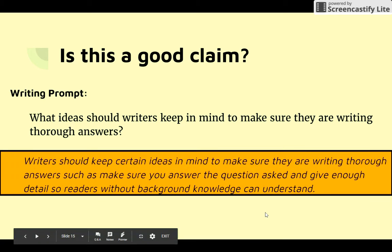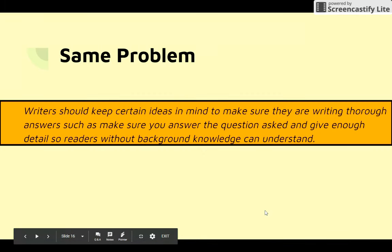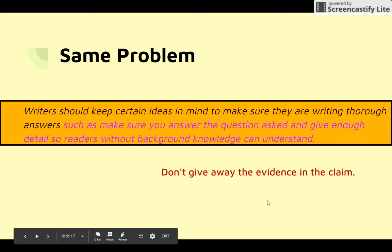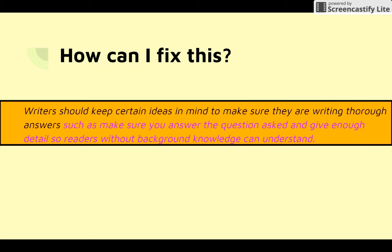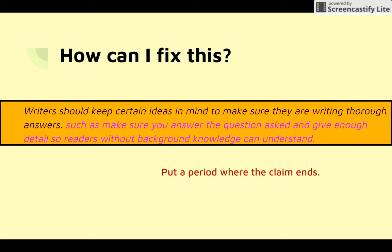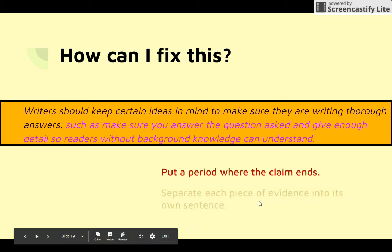Let's take a look at this claim: 'Writers should keep certain ideas in mind to make sure they are writing thorough answers, such as make sure you answer the question asked and give enough detail so readers without background knowledge can understand.' We've got the same problem — we're giving away the evidence in the claim. So how do I fix it? Put a period where the claim ends: 'Writers should keep certain ideas in mind to make sure they are writing thorough answers.' Period. That's your claim.